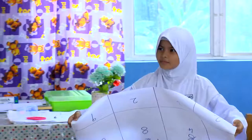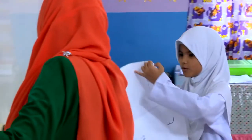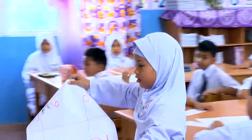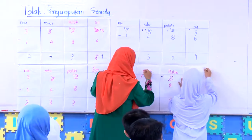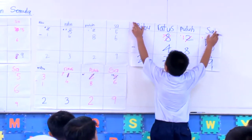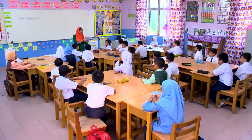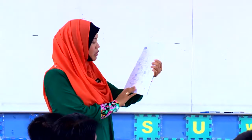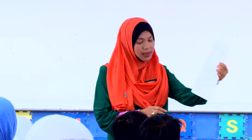Tadi, enam — kita nak pinjam satu, kita jadikan enam belas. Dalam otak, dia kena imagine benda itu enam belas — benda yang makin lama makin banyak. Sedangkan kita punya usaha untuk memudahkan mereka. So dekat sini, saya ada lembaran kerja. Dalam lembaran kerja ni, terdapat lebih kurang enam soalan.